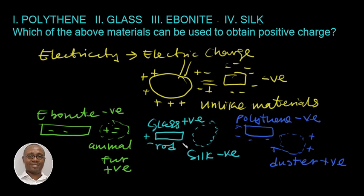Going back to the question, which of the above materials can be used to obtain positive charge, we can see from our illustration that it is the glass that will become positively charged while the other materials, the ebonite, the polythene and the silk will become negatively charged.